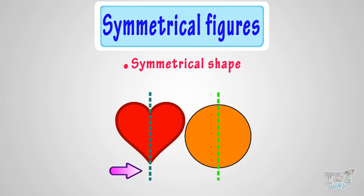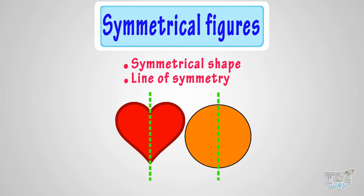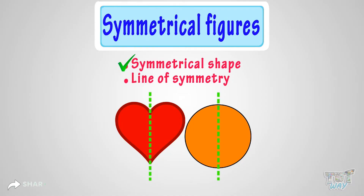And the fold line is the line of symmetry. So this shape is a symmetrical shape, and this line of fold that divides this shape into two similar halves is the line of symmetry.